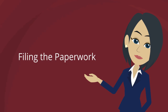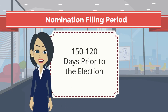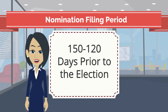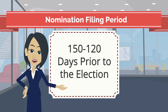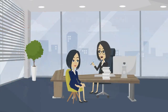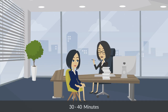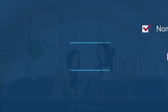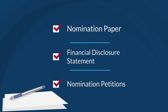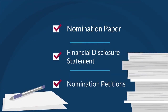Mary is ready to file her nomination paperwork. To become an official candidate, the paperwork must be submitted during the official nomination petition filing period. Mary contacts the City Clerk to set an appointment, which will last about 30 to 40 minutes. She brings the nomination paper, financial disclosure statement, and all nomination petitions with the minimum required signatures.